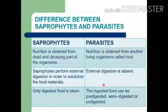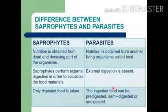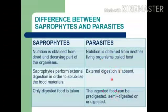In parasites, the ingested food can be pre-digested, semi-digested, or undigested. If it is not digested, the parasite will also take it. As I told you, the tapeworm is taken into the body, so when food is digested, semi-digested, or undigested, it is absorbed on the intestinal wall and the parasite absorbs all the food there.